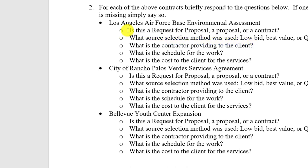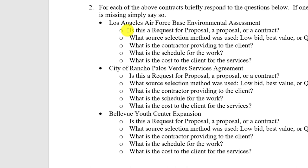The second part of the assignment asks you to analyze the three contracts. For each one, answer: first, is this a request for proposal, a proposal, or a contract? Second, what source selection method is being used — low bid, best value, or QBS? Then answer the three questions about scope, schedule, and cost: what is the contractor providing, what is the schedule, and is the cost clear? Some of this information may not be included in the artifact — that's fine, but you need to say so. Evaluate all three carefully.